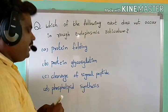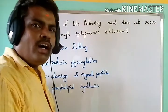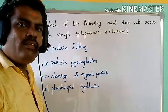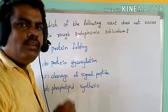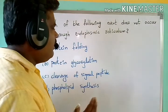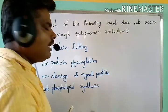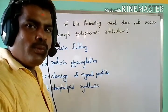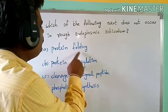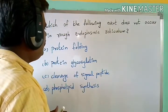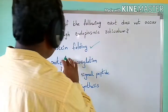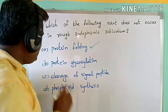Option A: protein folding. After formation of protein in the rough endoplasmic reticulum, proteins are folded into a systematic order so that the protein becomes functional. So protein folding does occur in the rough endoplasmic reticulum. This option is a correct activity of the RER.